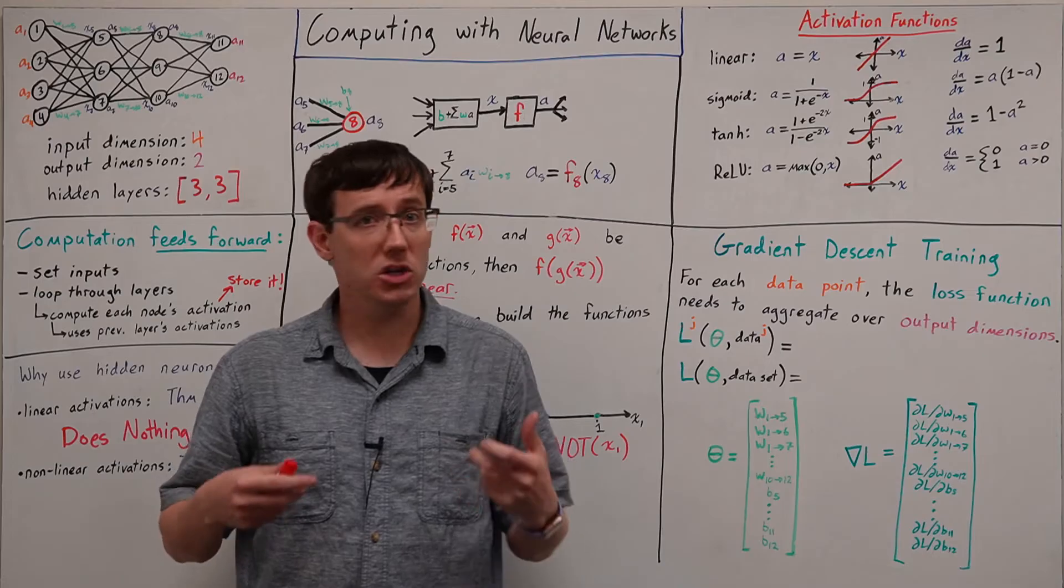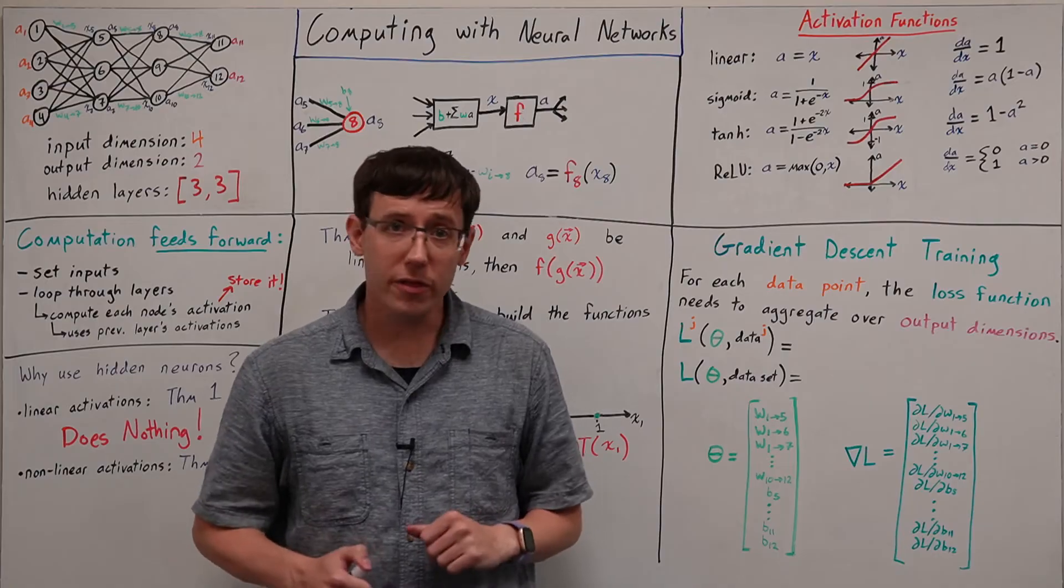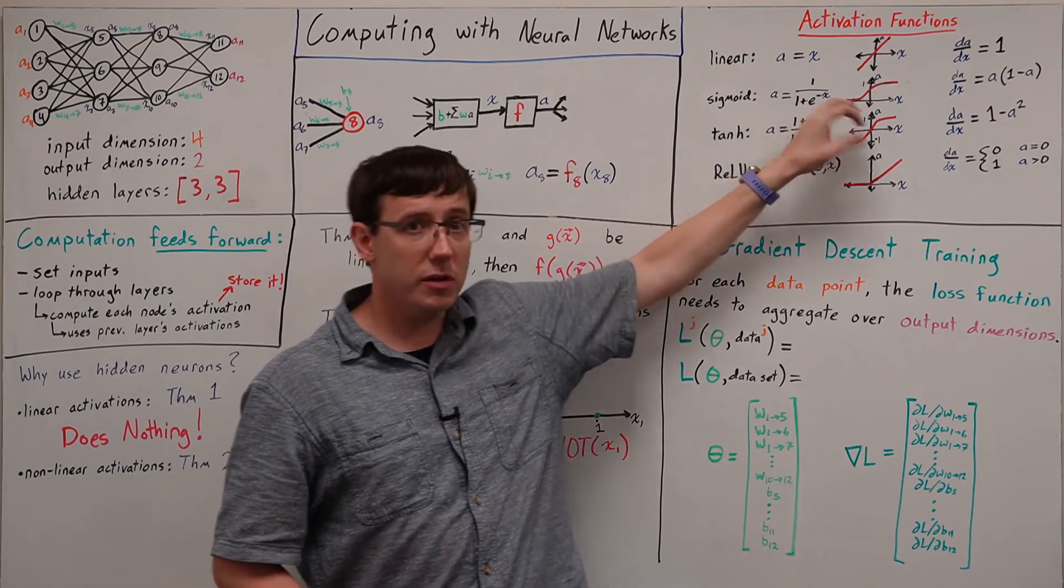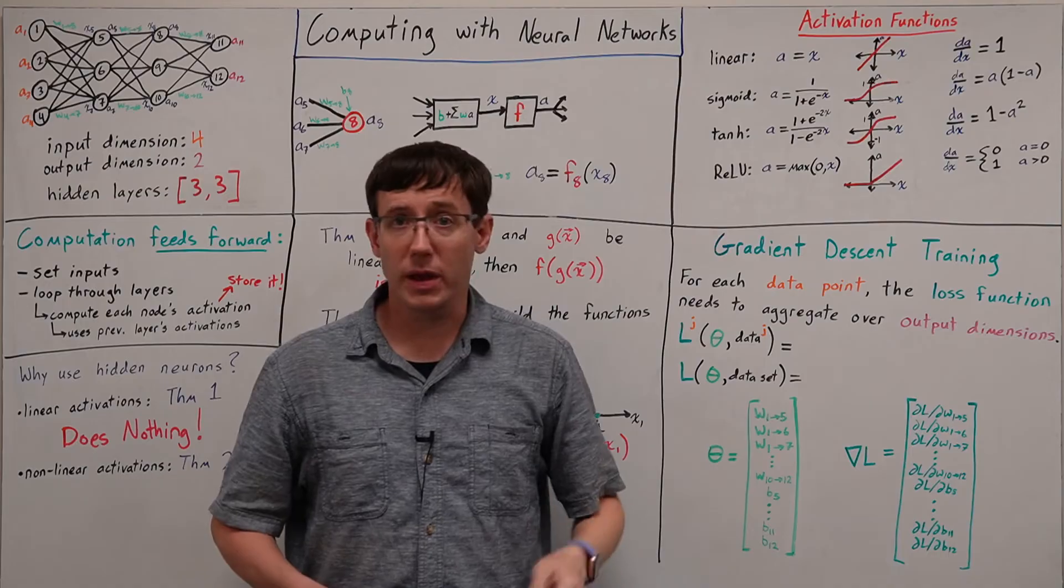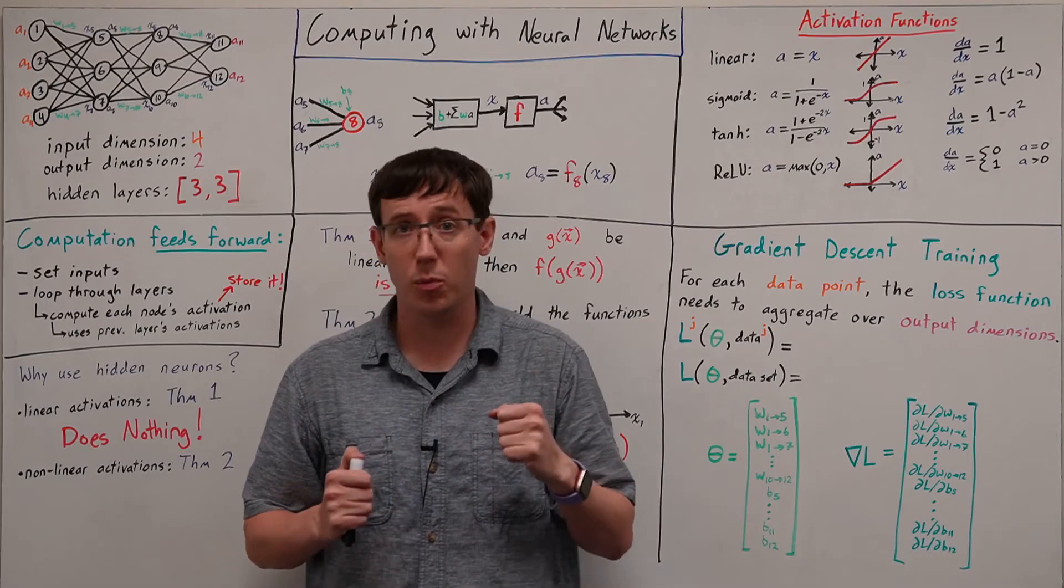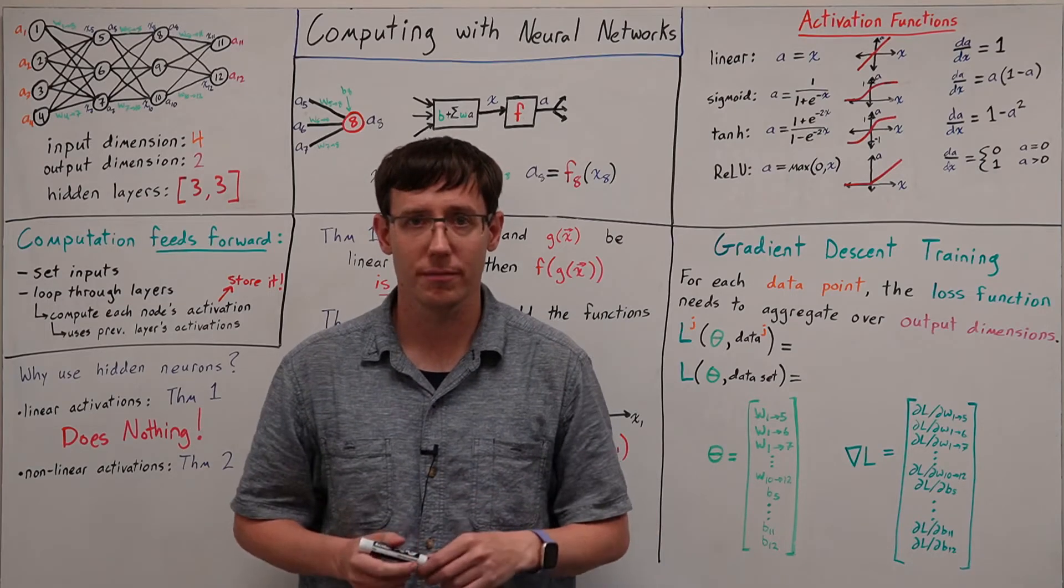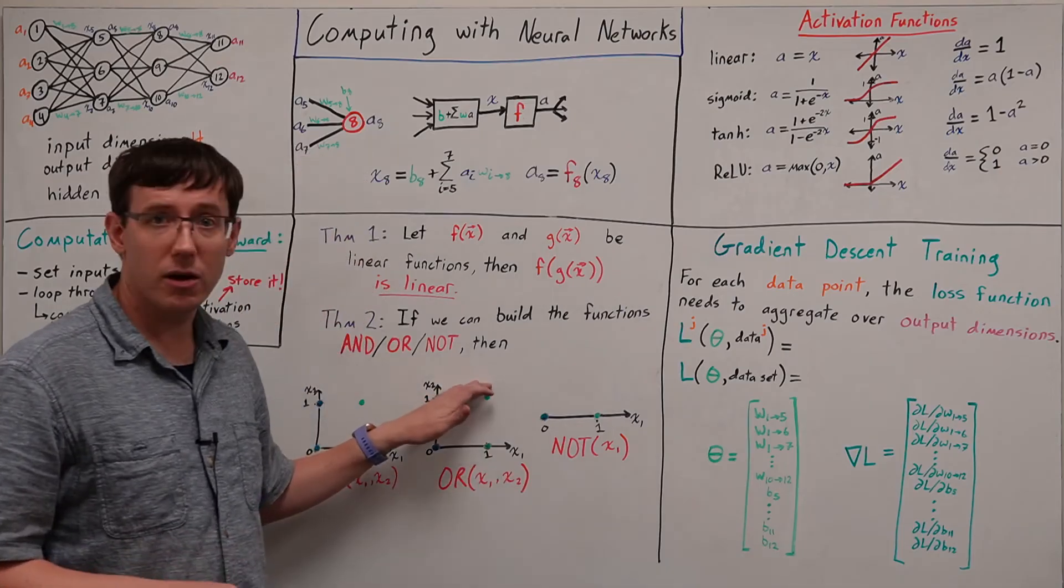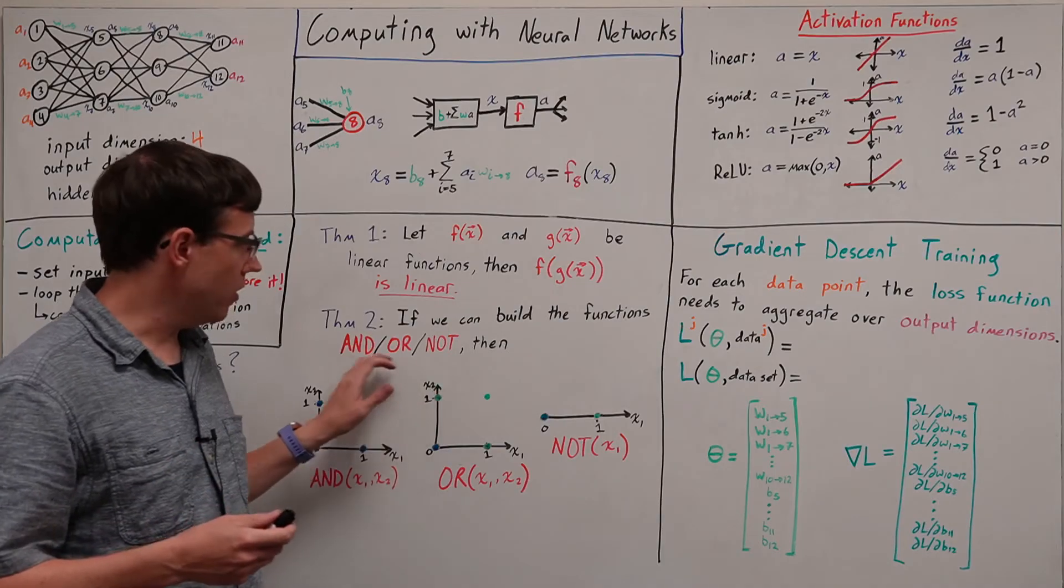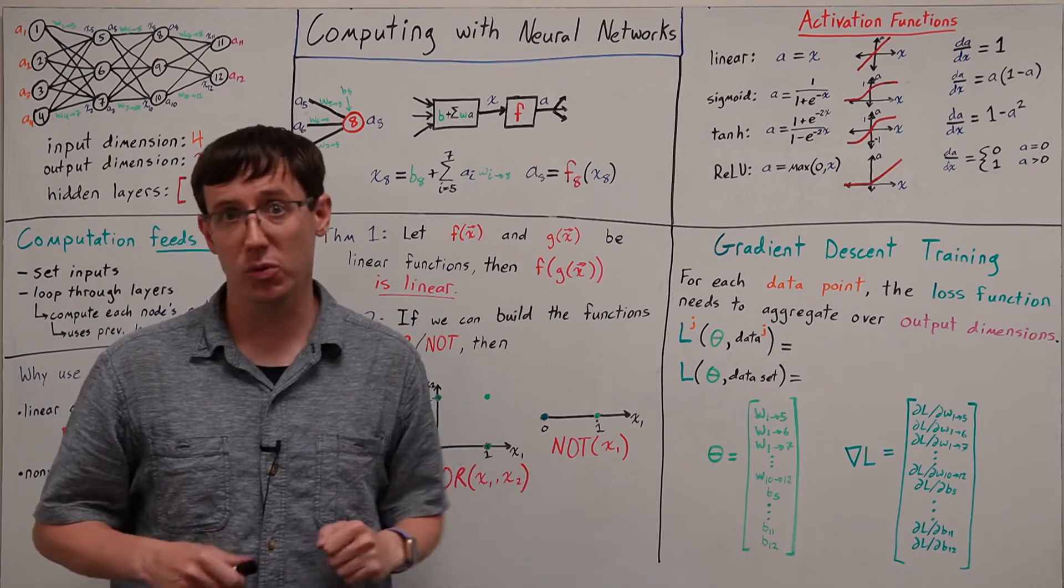But then the question becomes how much can we represent if we use nonlinear activations? Well, if we think back to our single neuron models with sigmoid activations, we use the sigmoid activation because it approximated a Boolean step function. And if we go back to that simplification and think about a step function outputting 0 or 1, we can think about what Boolean functions can be computed. And this leads us to a second theorem that you may have encountered in a class that covers Boolean logic, which is that if we can build and, or, and not, and then compose them together, we can represent any Boolean function.